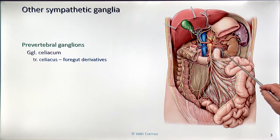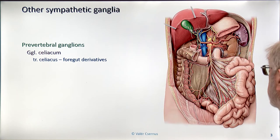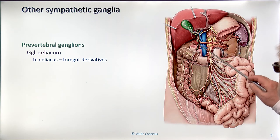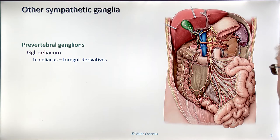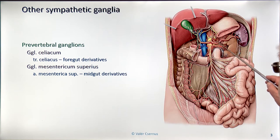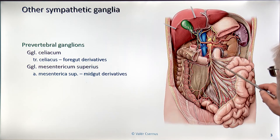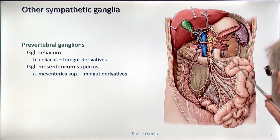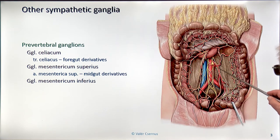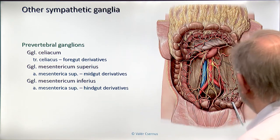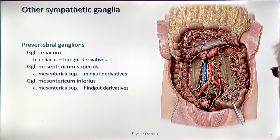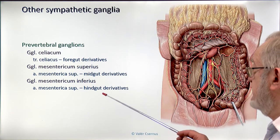The post-ganglionic fibers join the branches of the celiac trunk and control the blood supply of all organs supplied by the celiac trunk — in embryologic terms, the derivatives of the foregut. The superior mesenteric ganglion similarly is located around the origin of the superior mesenteric artery and controls blood supply of whatever is supplied by that artery. The inferior mesenteric ganglion is similarly around the inferior mesenteric artery and controls blood supply of organs supplied by it — the hindgut derivatives in embryologic terms.